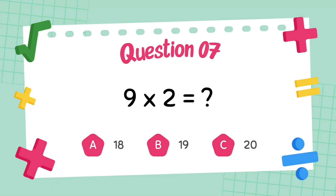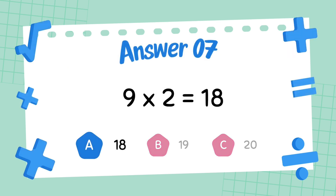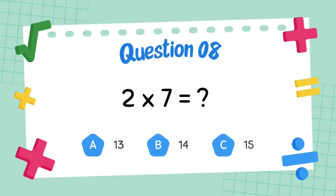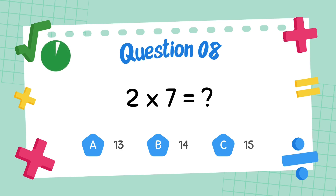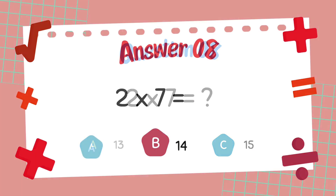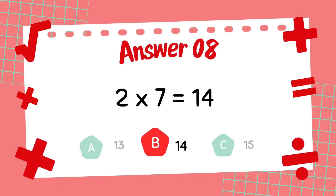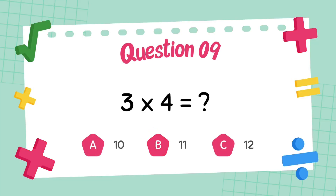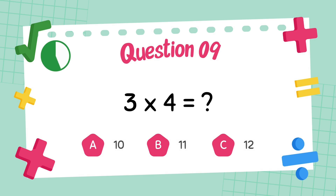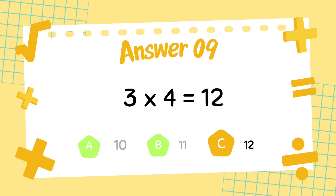What is 9 multiply 2? The answer is 18. What is 2 multiply 7? The answer is 14. What is 3 multiply 4? The answer is 12.